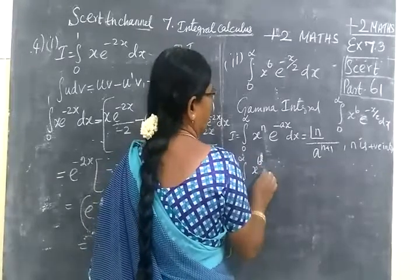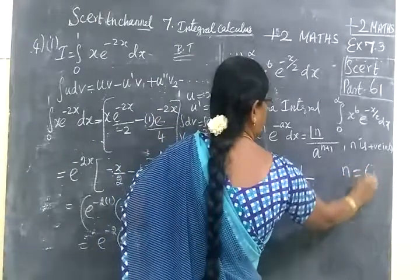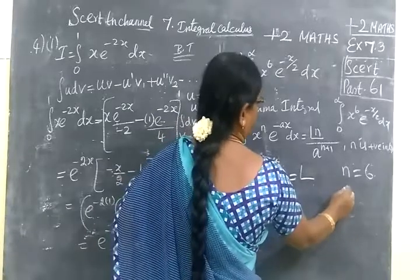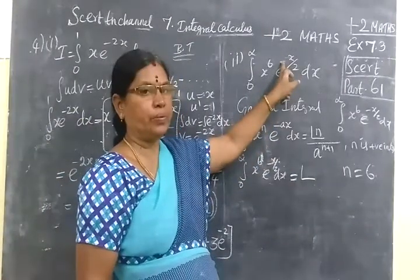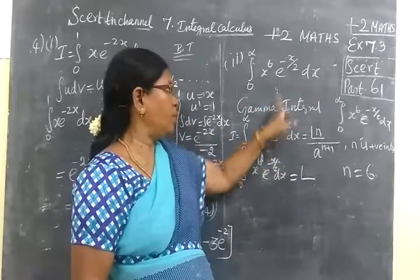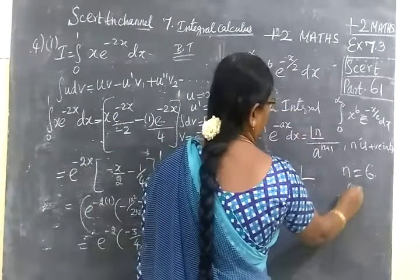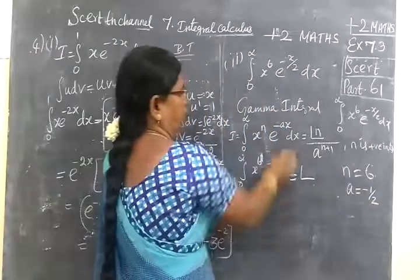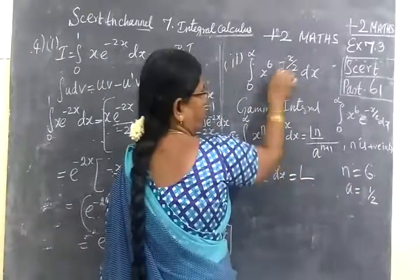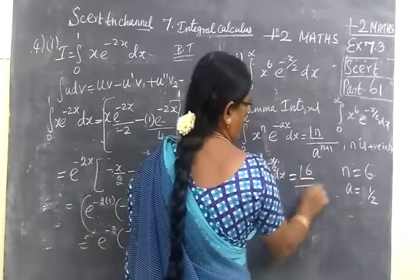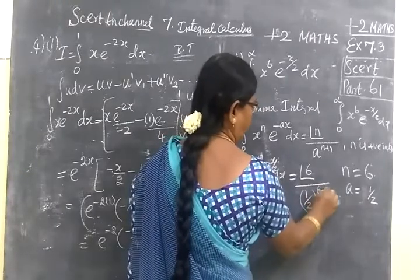So x power 6 times e power minus x by 2, dx. Equal to factorial n. n equals 6. In place of a, this is minus 1 by 2, so a equals 1 by 2. By a power n plus 1, n equals 6, so 6 plus 1 equals 7. a equals 1 by 2.